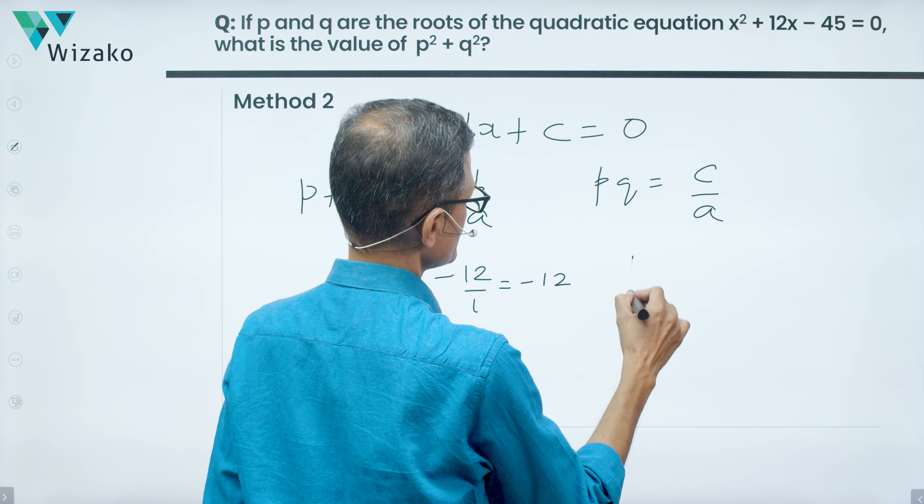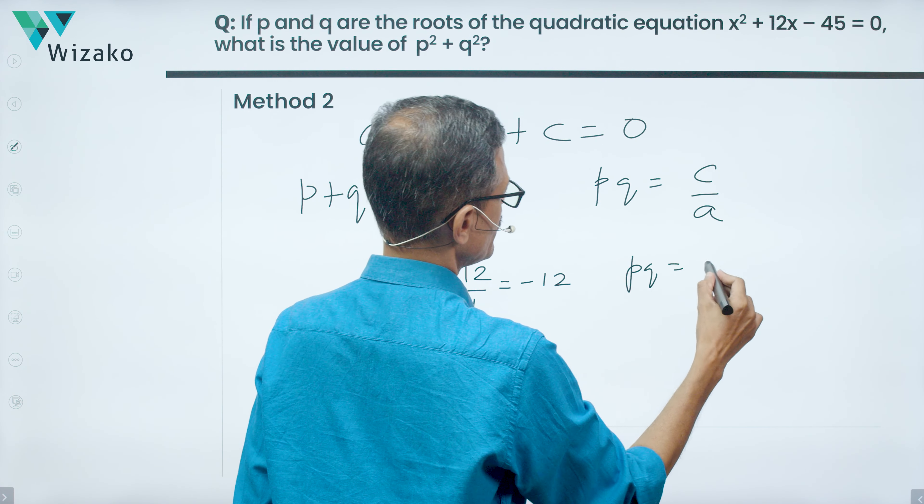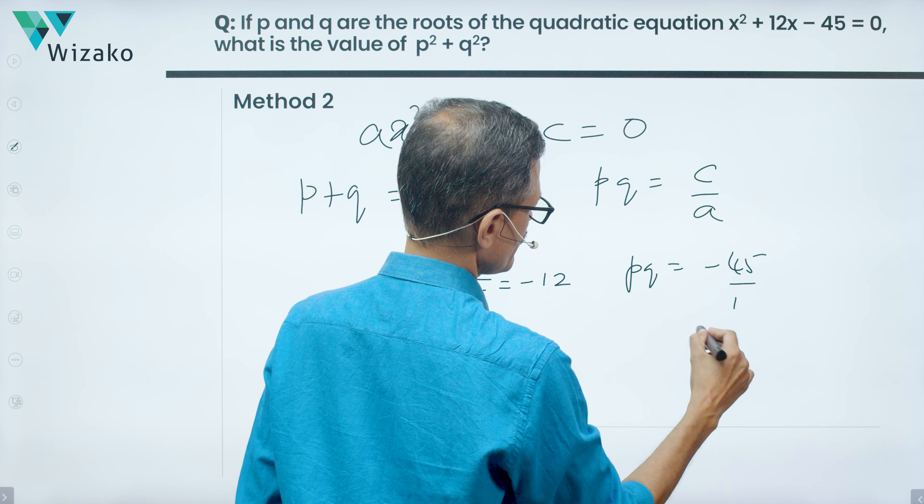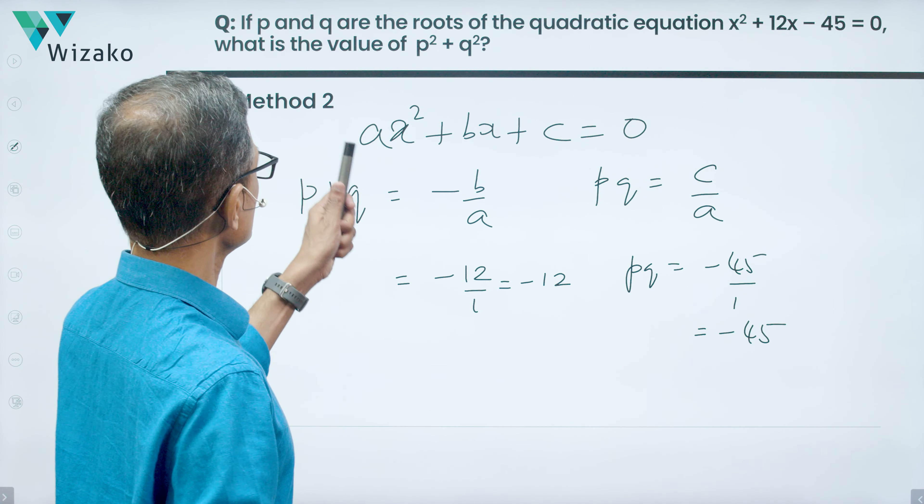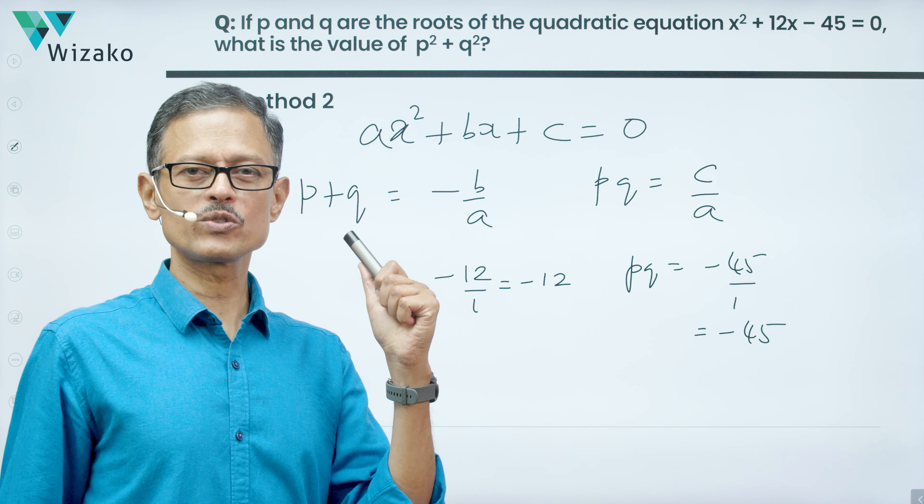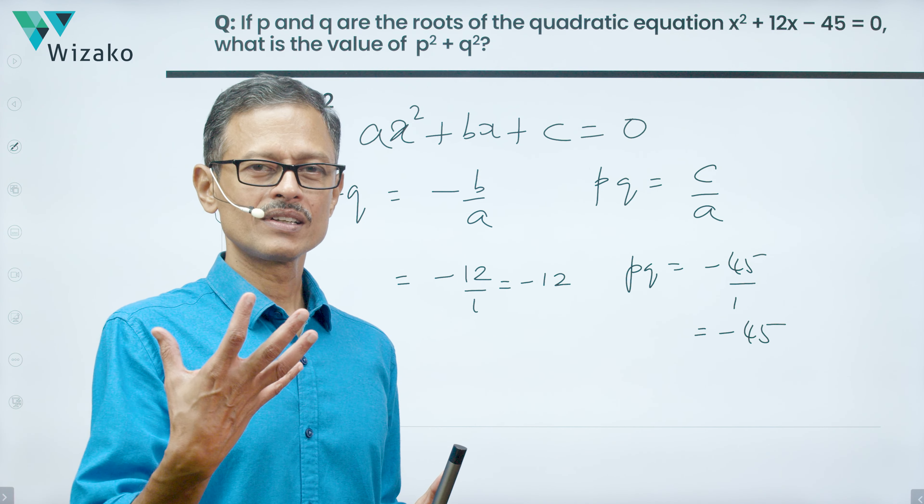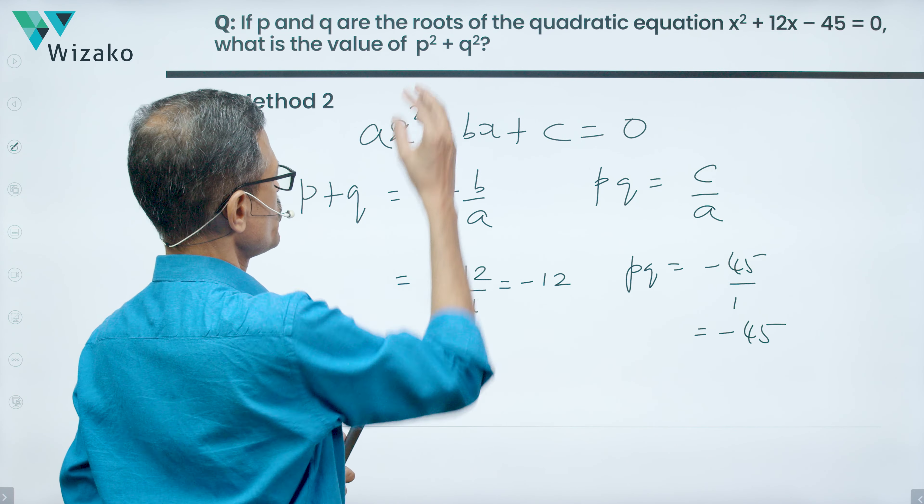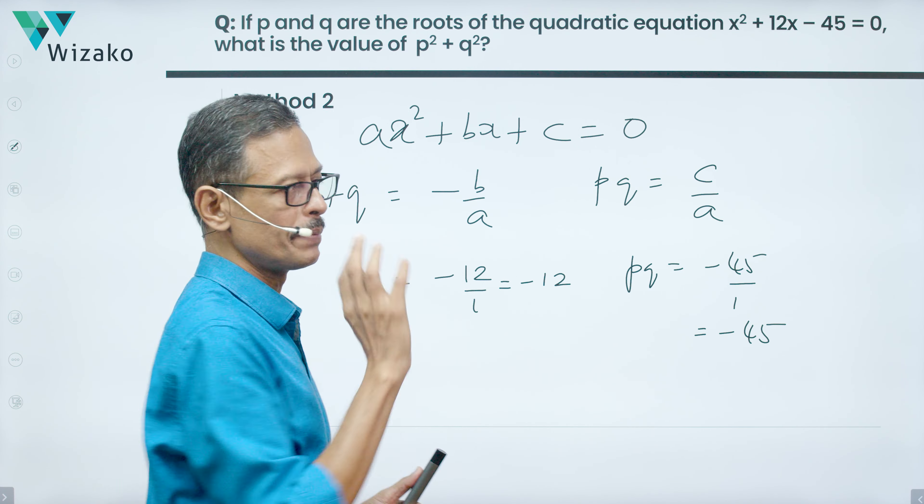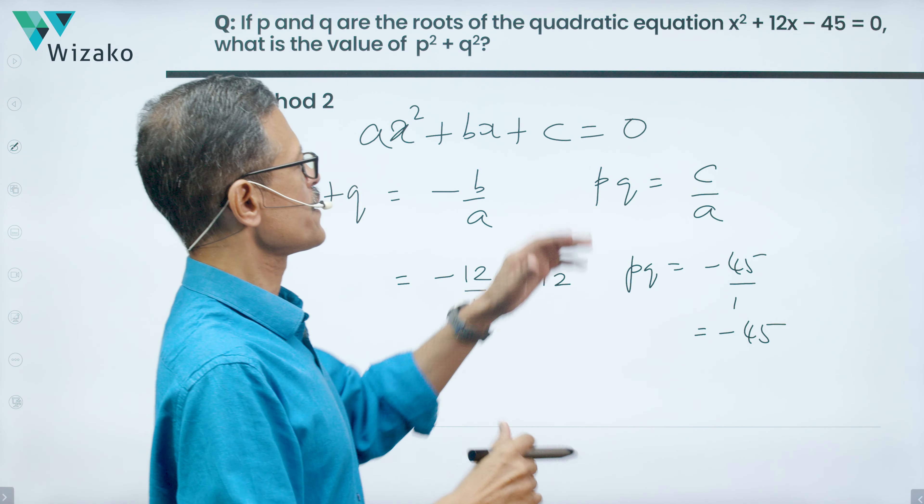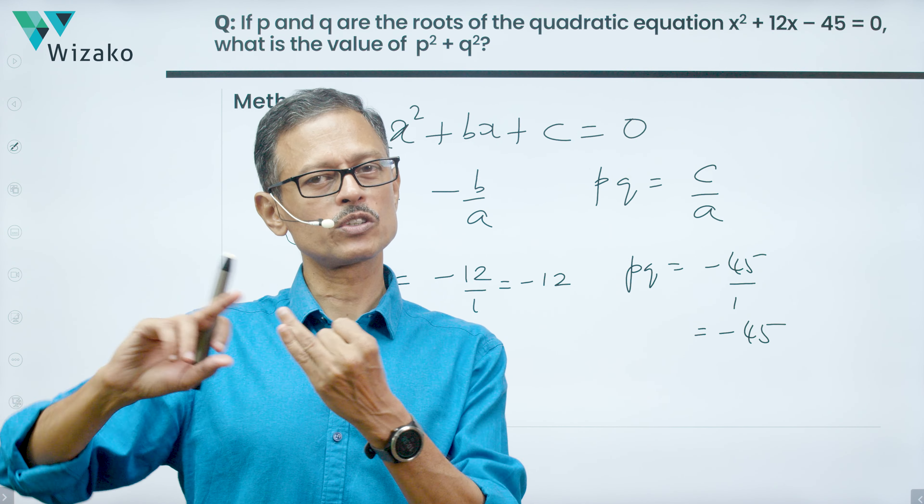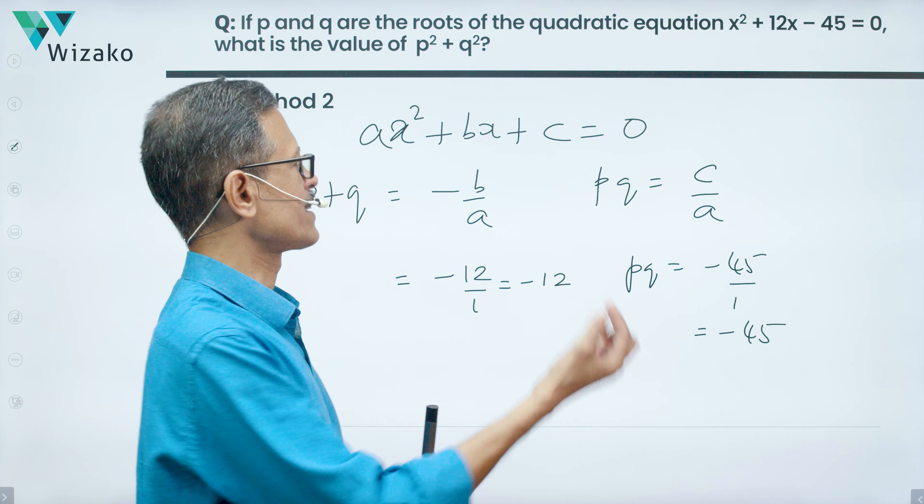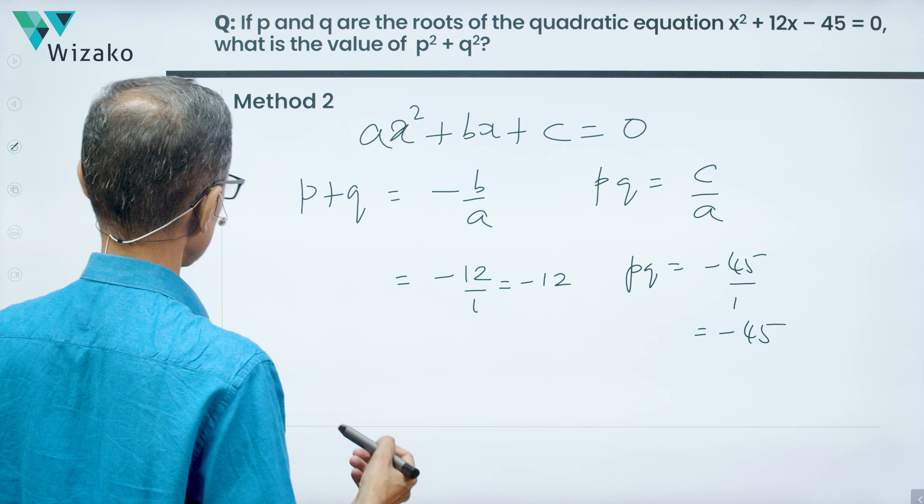Product of the roots pq is equal to c/a which is equal to -45/1 which is equal to -45. What is asked of us is p² + q². So we're going to try and figure out how do we write p² + q² in terms of p + q and pq, because from the coefficients of the quadratic equation, we'll be able to find out the sum of the roots and the product of the roots. Can we use that to figure out this p² + q²?